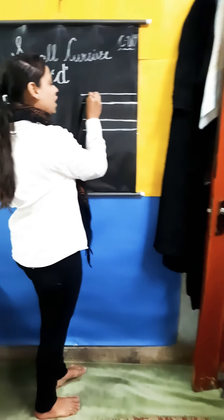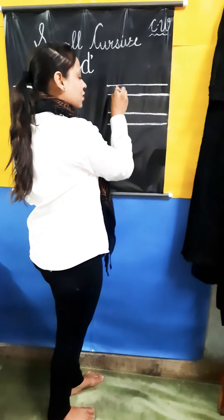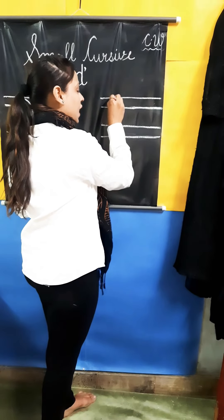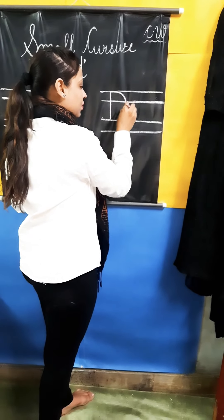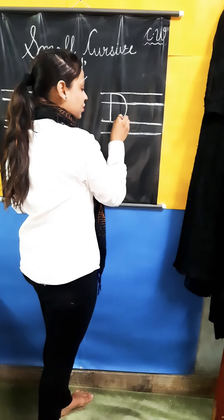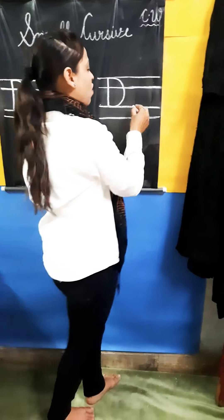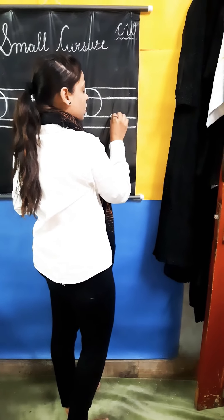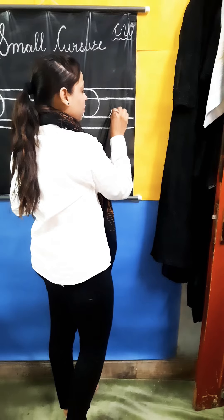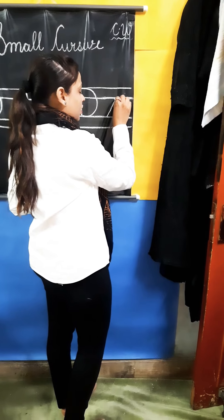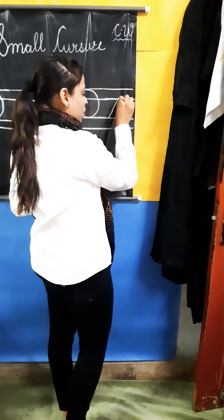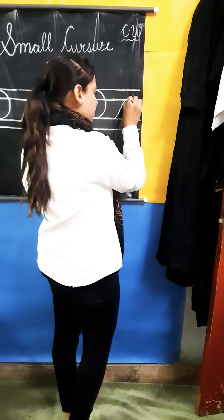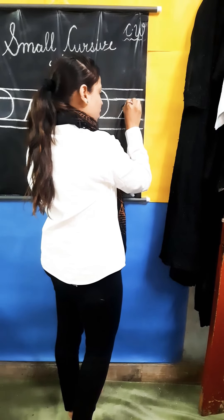Once again we will make it. Firstly Ma'am is making capital D. Now we will make small cursive D. Start from the third line, make a slanting line till the second line, then curve.